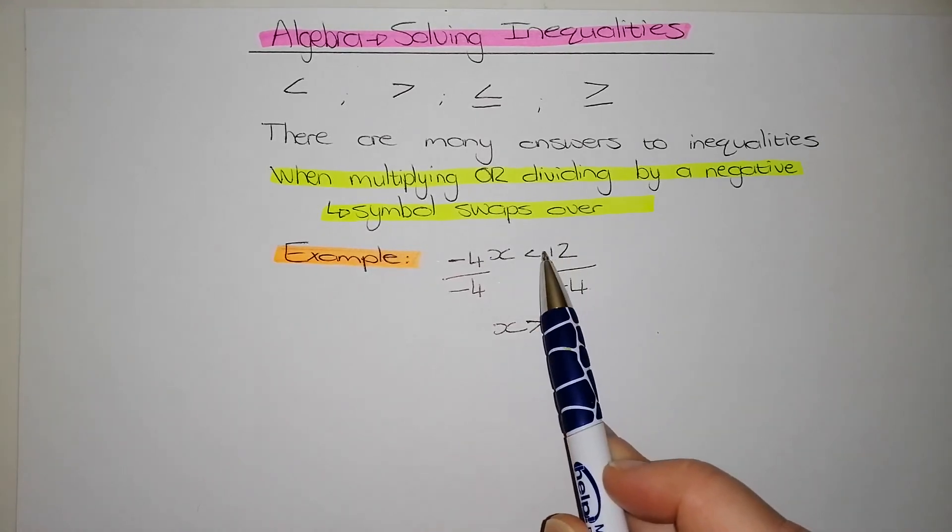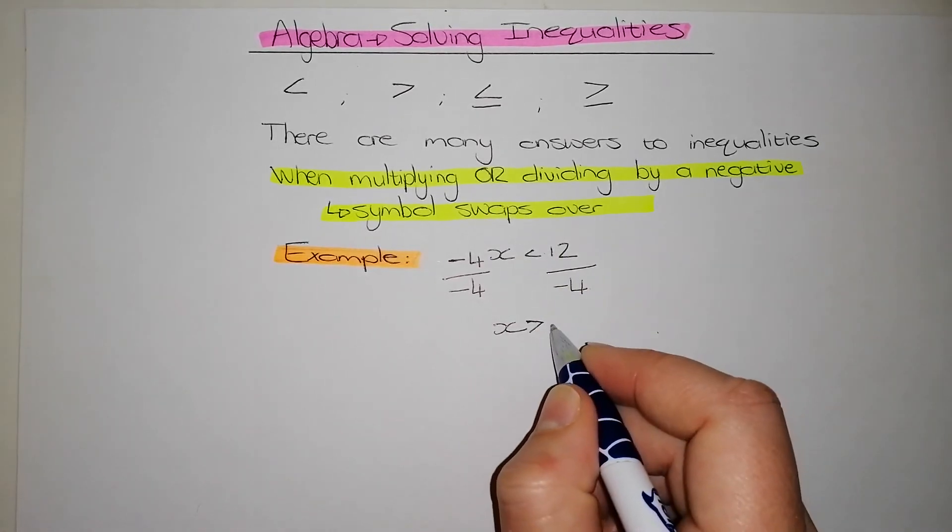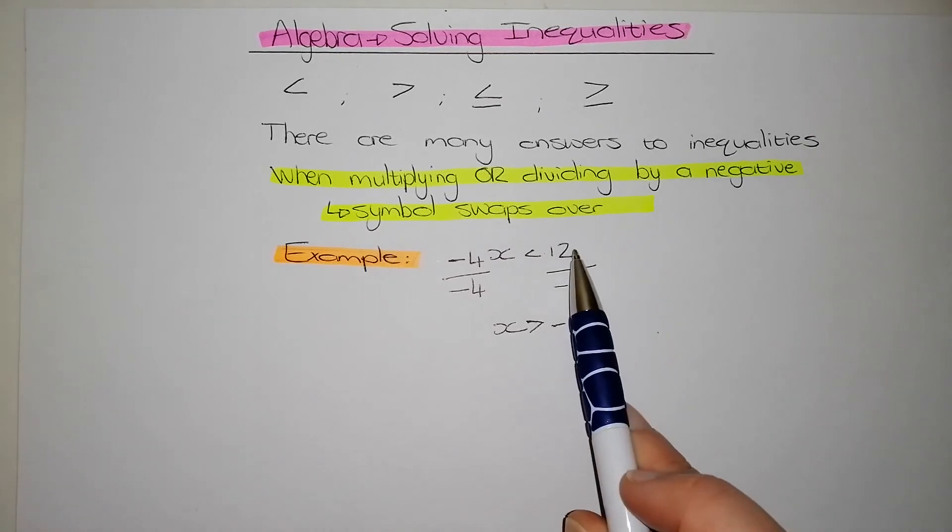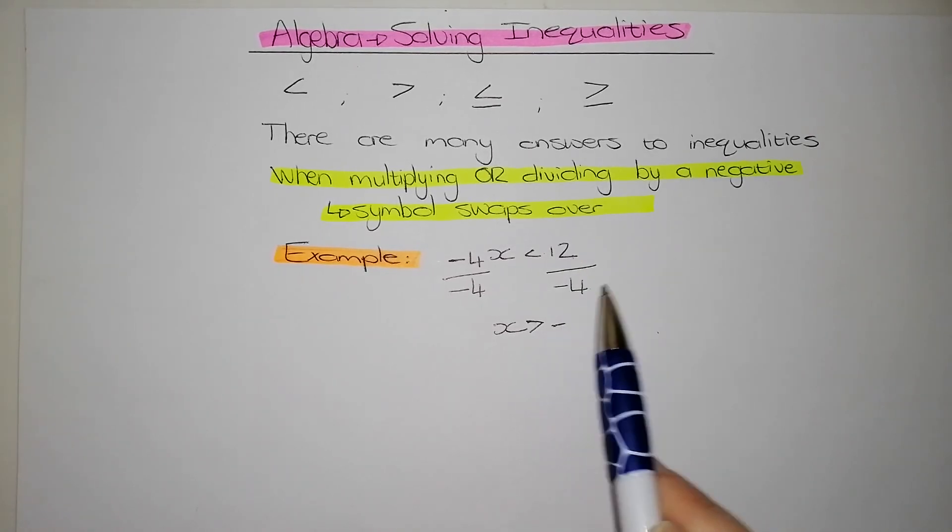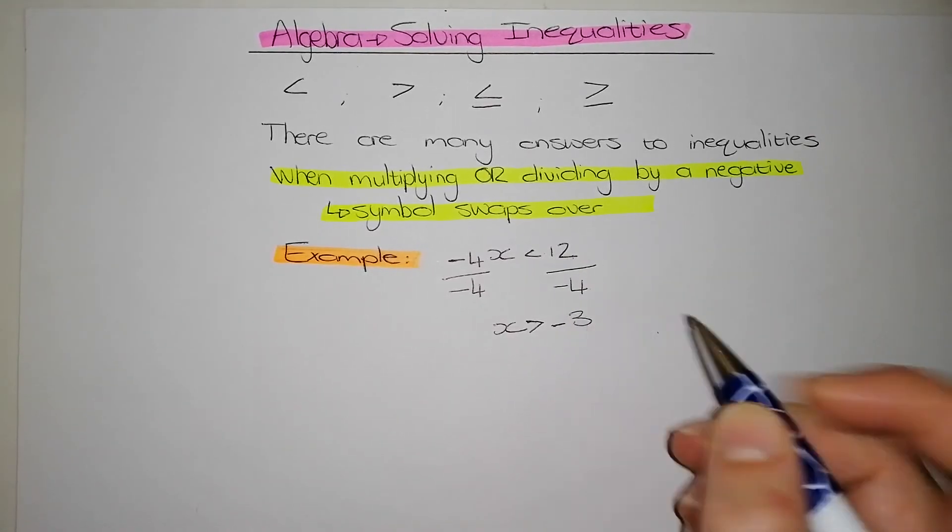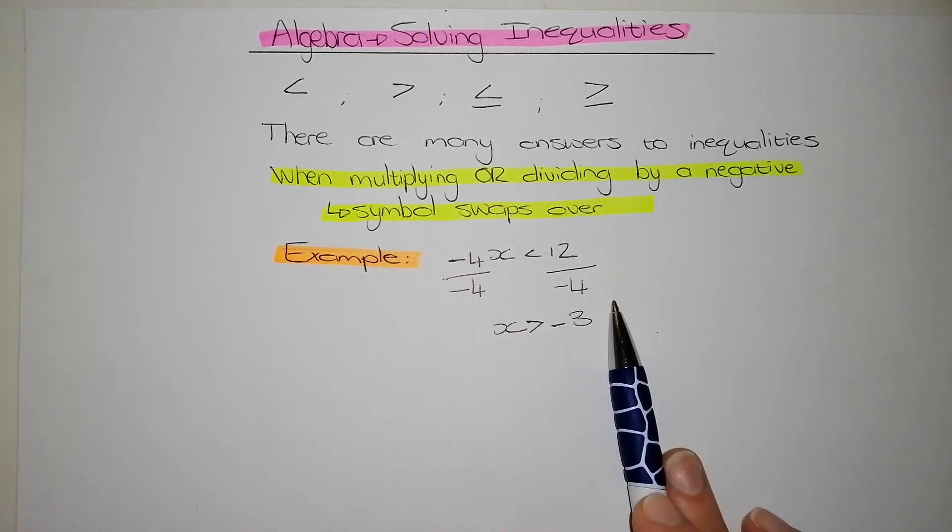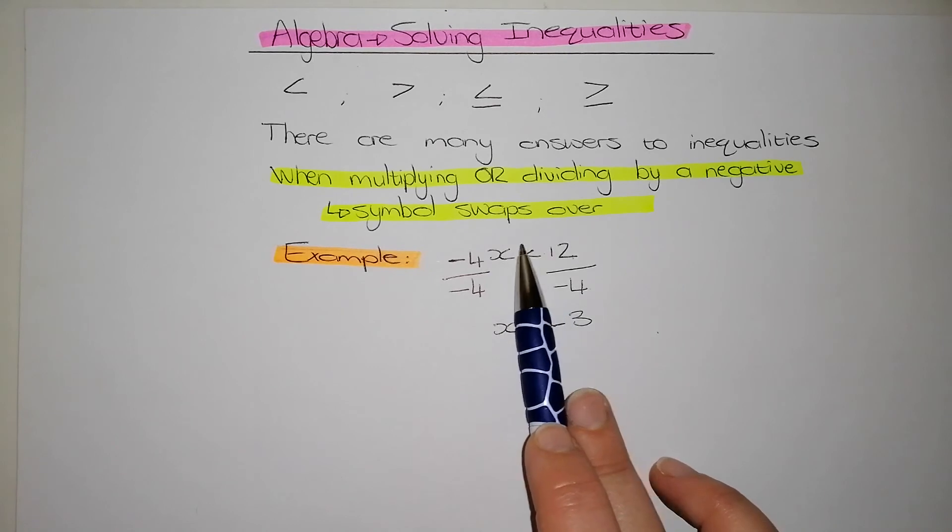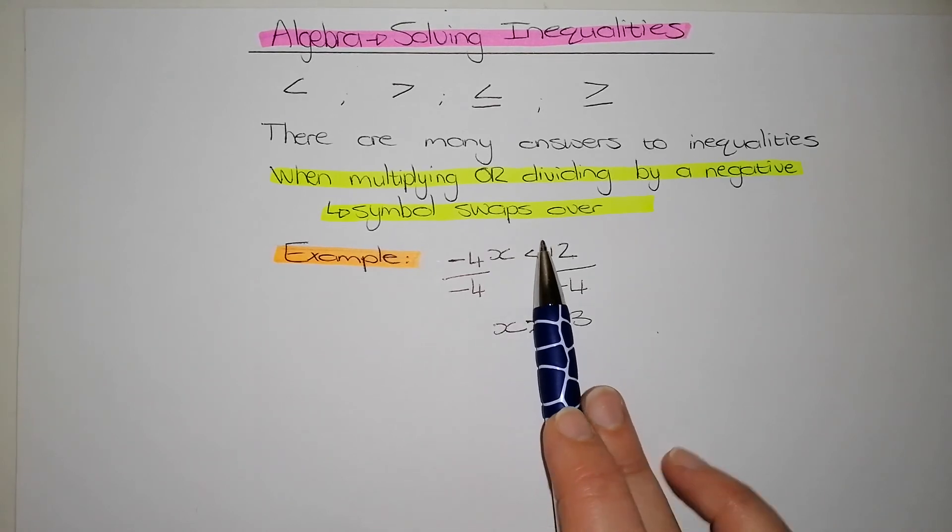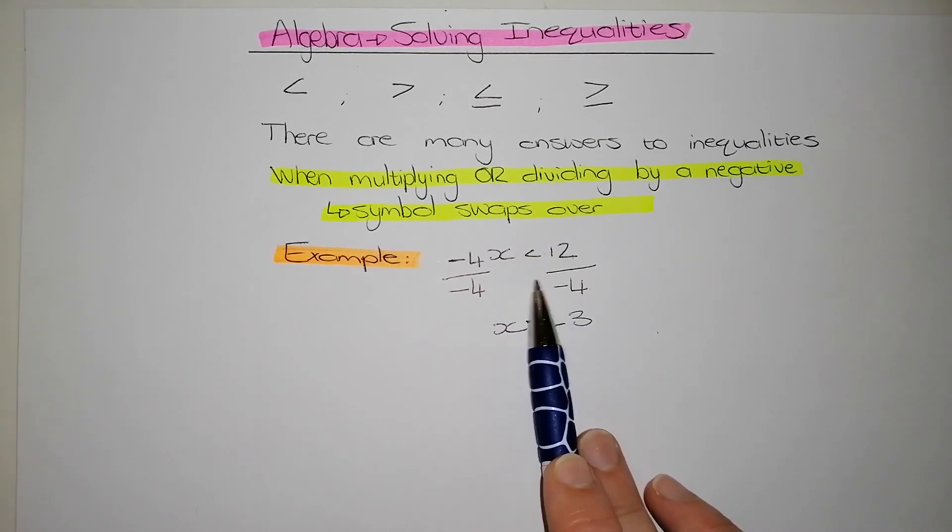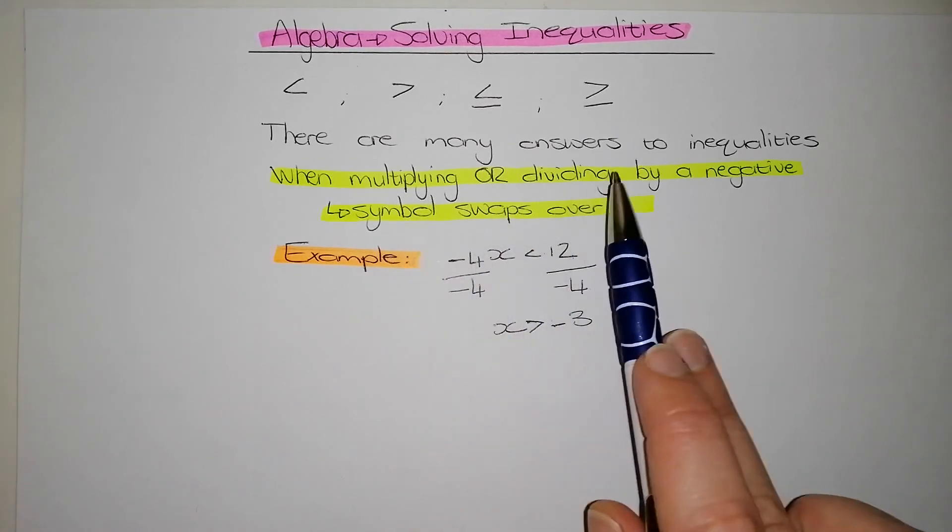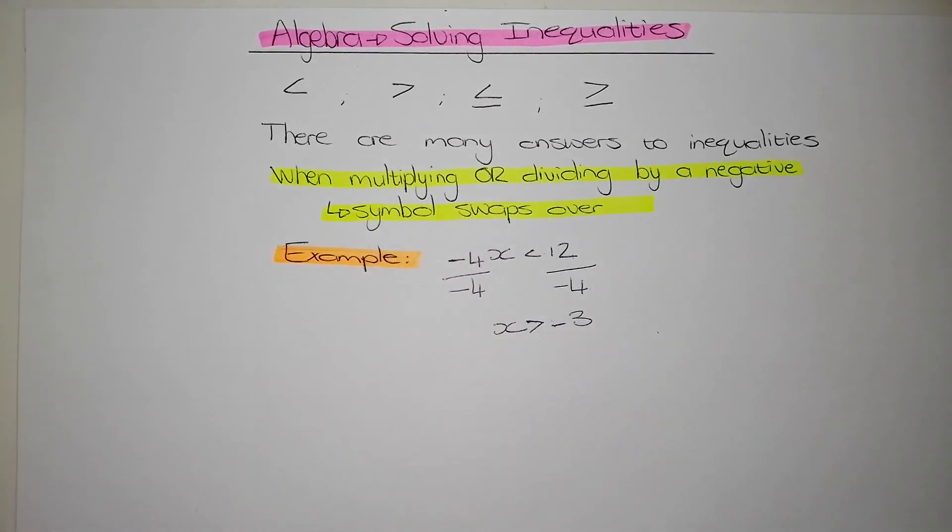And a positive times a negative is a negative. And 12 divided by 4 is 3. And this is how you solve inequalities. The numbers you treat exactly like if the inequality was an equal symbol. The only time it is not treated as an equal symbol is when we are multiplying or dividing by a negative. And this is how we treat inequalities in algebra.